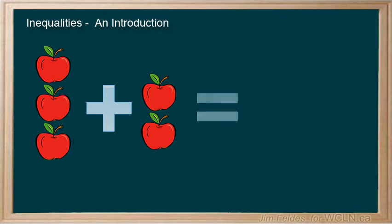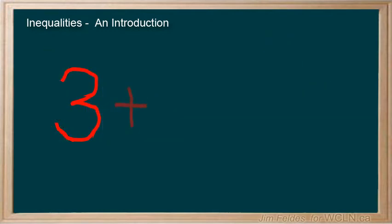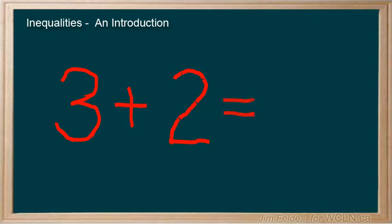Then came the equal sign. Now we were relating two math expressions to be the same or equal. Your first math equation. And soon you were able to do this without all that fruit, as symbols could express the concept of addition and things being equal. Your first equations were your introduction to the idea that what is to the left of the equal sign has the same value as that to the right.